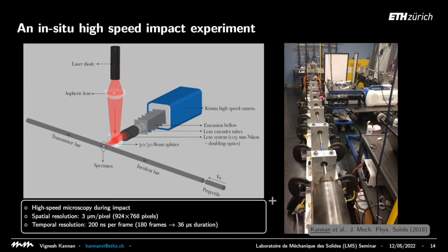This is a picture of the Kolsky bar used for these experiments, done during my PhD at Johns Hopkins University. A gas gun fires a projectile — that's the incident bar — and the camera points at the sample. We used a state-of-the-art high-speed camera and built a microscope in front of it, achieving time resolutions of 200 nanoseconds per frame and spatial resolutions of about three to five micrometers per pixel.